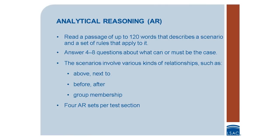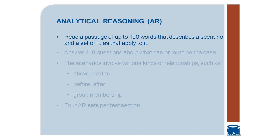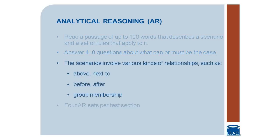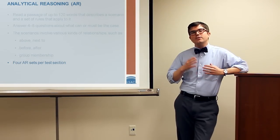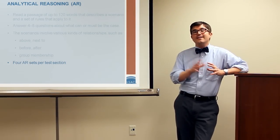There will always be one AR section on every exam. In this section, you will read passages of 120 words or less. Each passage will describe a scenario and some rules that apply to that scenario. Then you will be asked a series of 4 to 8 questions about the scenario. These scenarios always involve relationships among a group of objects, concepts, or individuals. The AR section will always have 4 sets of passages with associated questions. In total, there will be approximately 24 AR questions in the section.